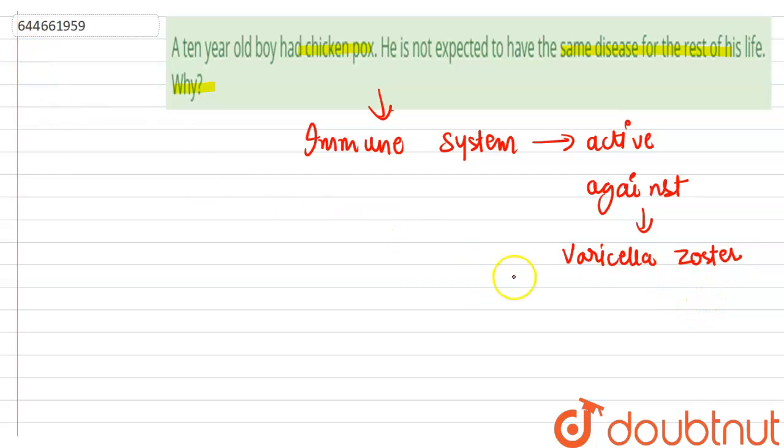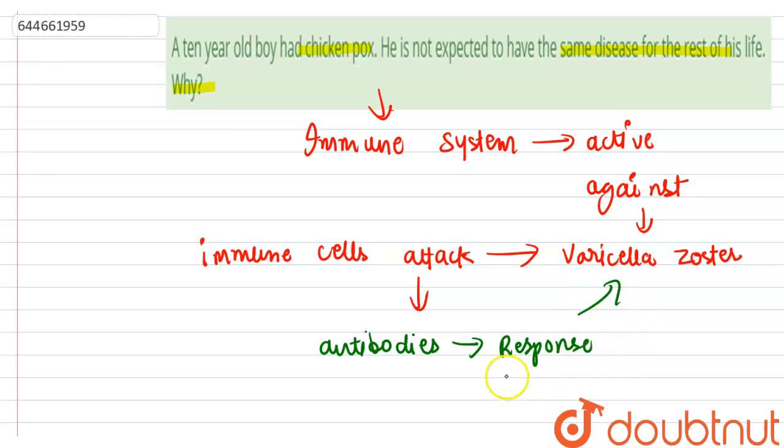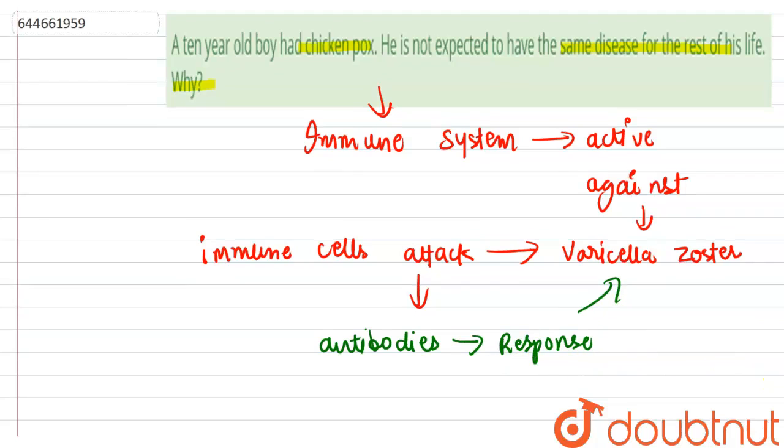The immune cells attack the foreign pathogen and also generate antibodies in response to the foreign pathogen.